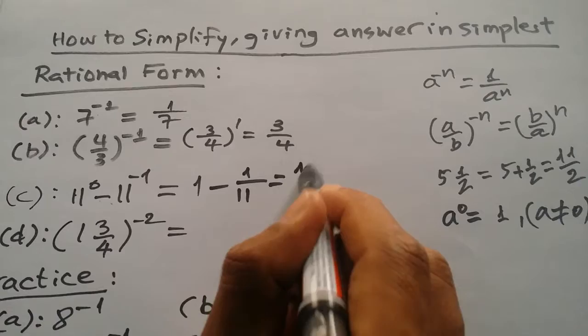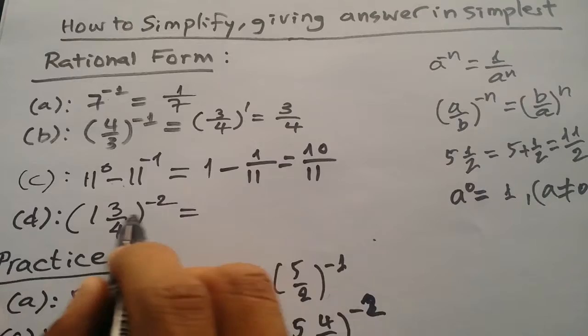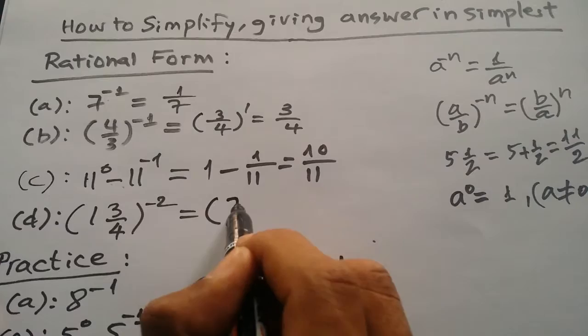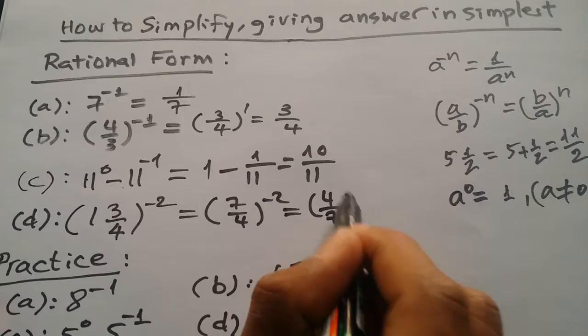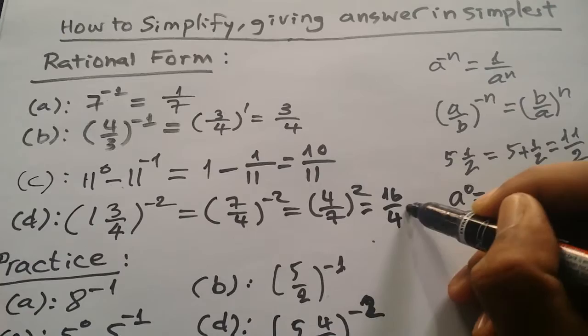So the answer will be 10 divided by 11. For part b, we have 1 and 3 divided by 4. We simplify first: it becomes 16 divided by 4, which gives 16 divided by 49. That is the answer.